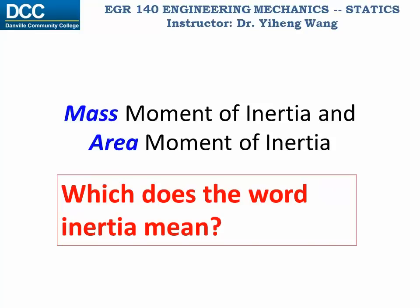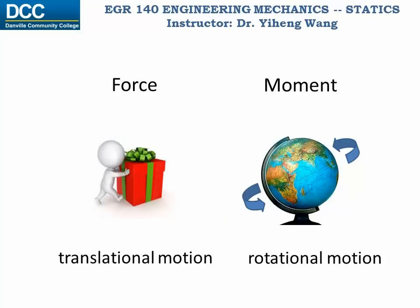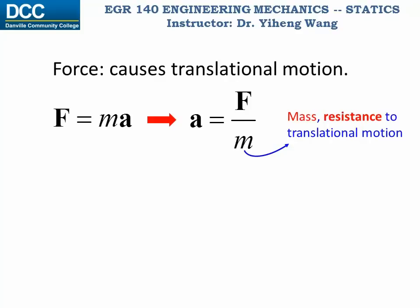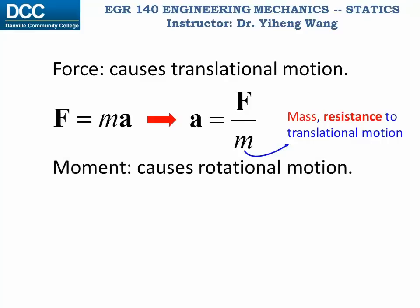But what causes motion? We know that force causes translational motion, while moment causes rotational motion. According to Newton's second law, force equals mass times linear acceleration. Or it can be written as: the acceleration A is caused by force F, and it equals F divided by the mass of the object M. As you can see, mass is the resistance to translational motion, and that's why mass is sometimes also called inertia mass. And since moment causes rotation, can we write something similar and relate moment to the rotational motion of an object? Indeed we can.